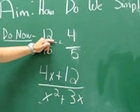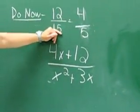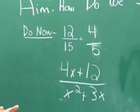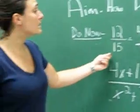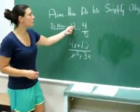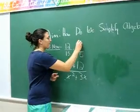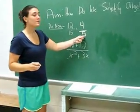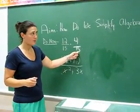If you look at the do now here, we have 12 over 15. We look for the greatest common factor that goes into both the numerator and the denominator. In this case, it's 3. 3 goes into 12, 4 times. 3 goes into 15, 5 times. So 4 fifths is the simplest form of this fraction.